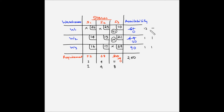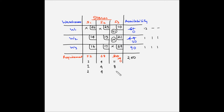We again evaluate the penalty differences for each row and column. We skip the first row. For the second row, 14 minus 13 = 1. For the third row, 17 minus 16 = 1. For the first column, 16 minus 14 = 2. For the second column, 17 minus 13 = 4. The third column is fully allocated so we skip it. The second column has the largest difference of 4.